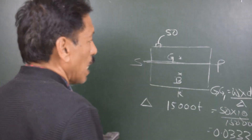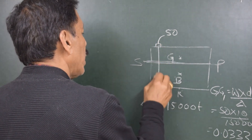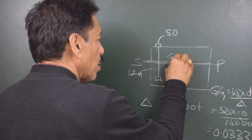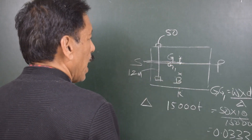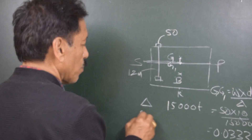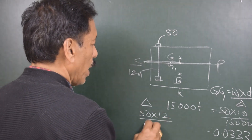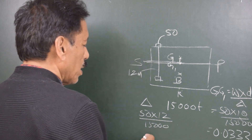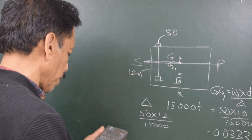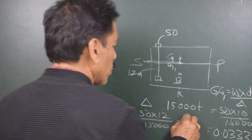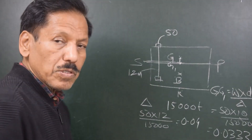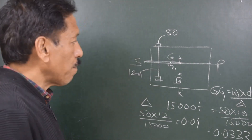Now assume the shift is in the vertical direction — downwards by 12 meters. The center of gravity of the ship will also shift downward. GG1 = w × d / displacement = 50 × 12 / 15,000 = 600 / 15,000 = 0.04 meters. This is what happens when we shift the weight vertically.